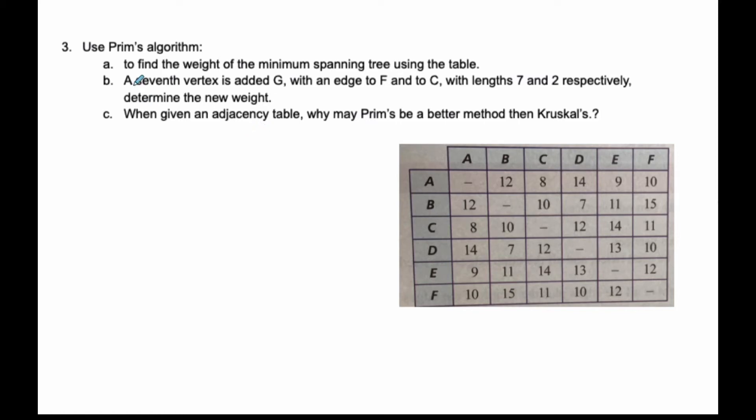Here we are with minimum spanning trees. We're going to use Prim's algorithm to find the weight of the minimum spanning tree using a table. Sometimes we're given the adjacency table, and it will be good to find the spanning tree using the table. The same premise applies.